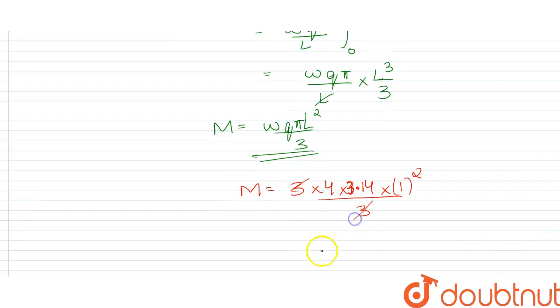3 and 3 cancel. We have M equals 12.56 ampere meter squared. This is the value of magnetic moment of this rod. Thank you.